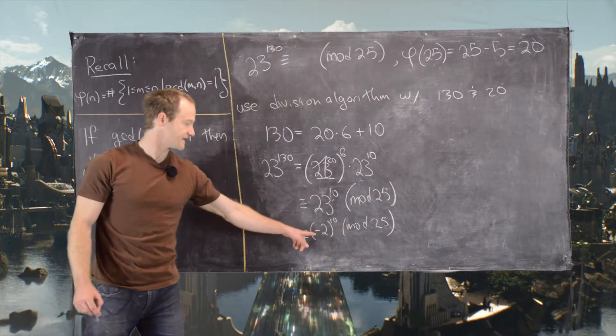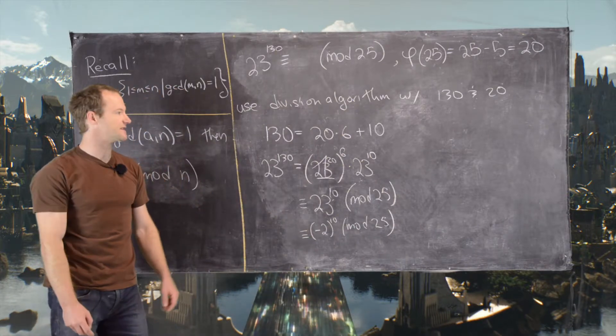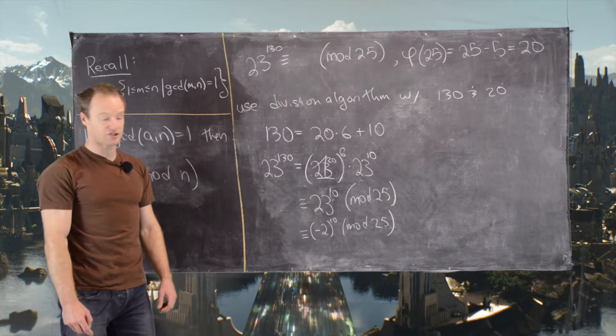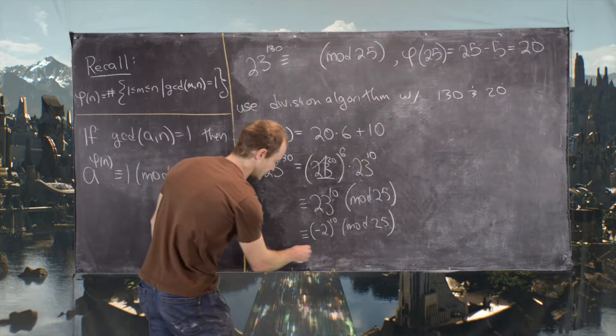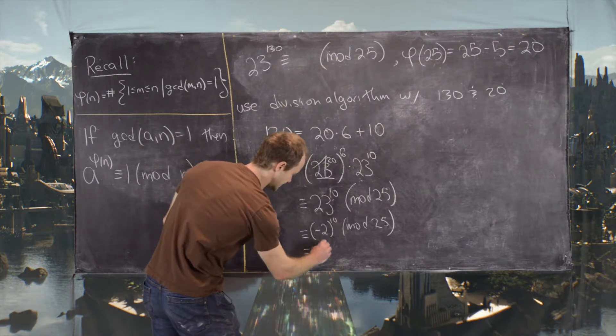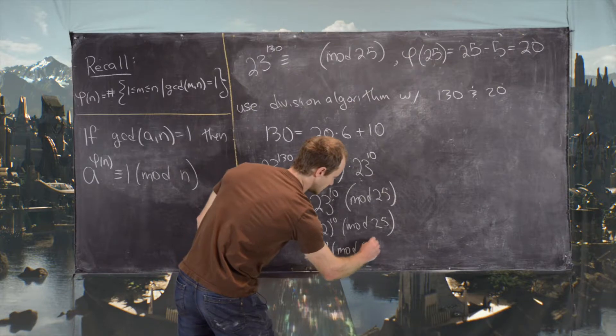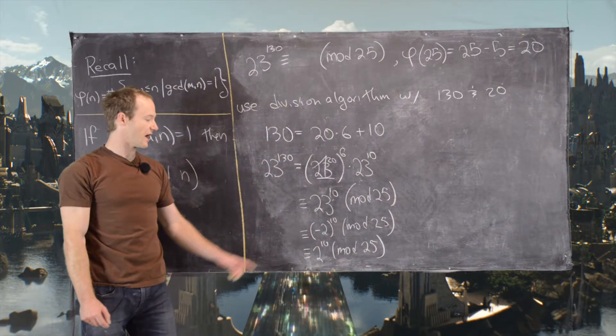But now since we have negative 2 to the 10 and 10 is an even number, we in fact really just need to look at 2 to the 10 mod 25. So here we'll look at 2 to the 10 mod 25. Great.